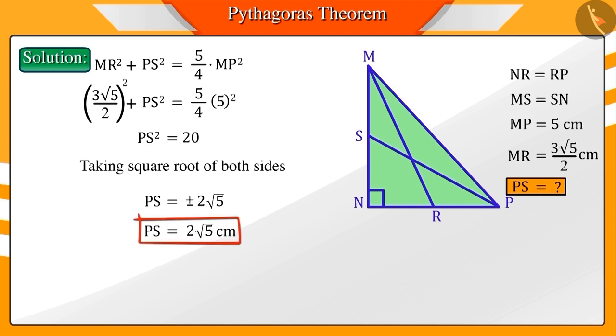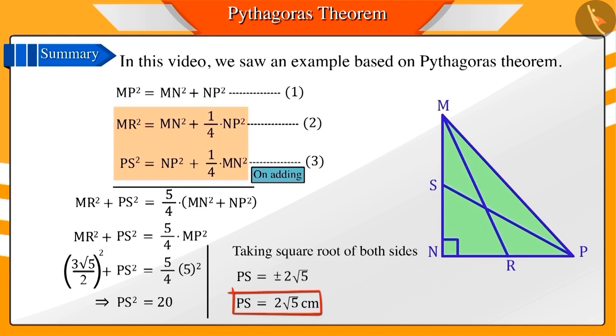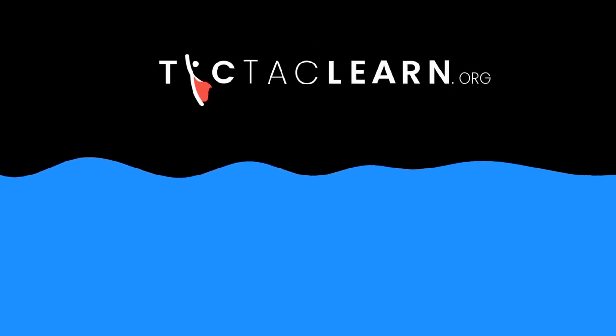So, the length of PS will be 2 square root of 5 centimeters. Hope that now you've understood the Pythagoras theorem well. Thank you!